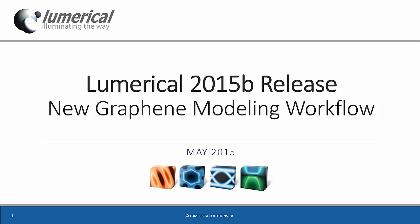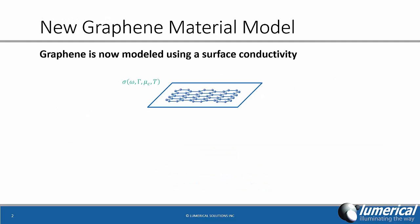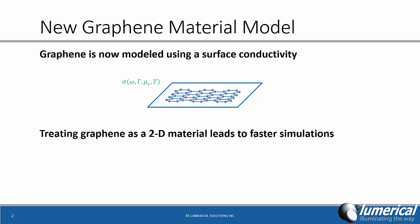A new graphene modeling workflow will be available in the 2015b releases of FDTD solutions and mode solutions. In the new workflow, graphene is modeled using a surface conductivity rather than a volumetric permittivity as it was done in previous releases. We have been able to demonstrate that this approach is much more computationally efficient and it can reduce simulation time significantly.